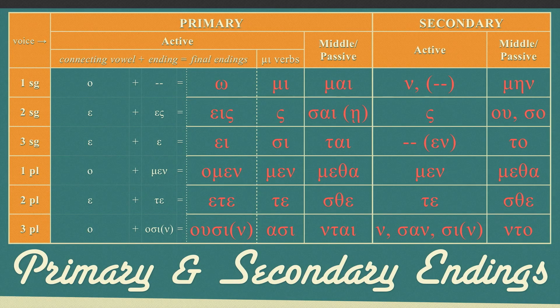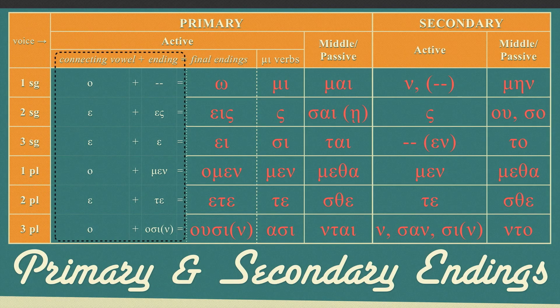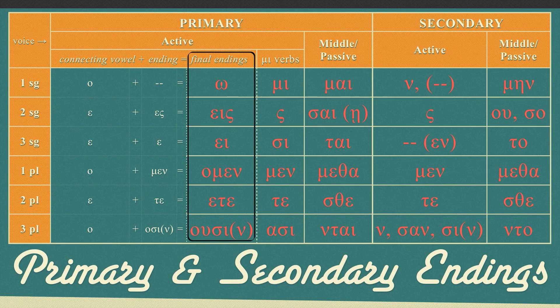Notice in the primary active endings how they are presented with the connecting vowel plus inflection forming what I call the final ending. This is done because the connecting vowel, slot five, interacts with the inflection. So primary active endings in their final form are O, ACE, A, AMEN, ETA, USI.